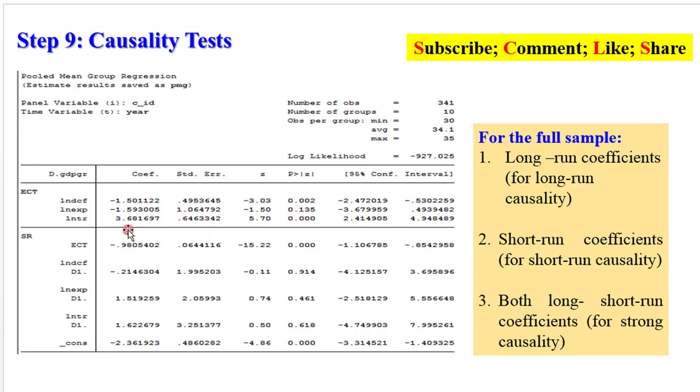But if you look at the error correction term, you can infer joint causality of the variables—that is, all the variables together jointly have an effect on the dependent variable in the long run because this one shows long-run cointegration. There is going to be long-run convergence to equilibrium at the speed of 98%. So the error correction term gives you joint causal effects. So this is for the full sample.